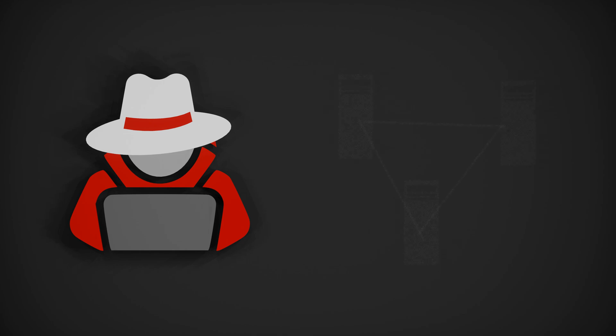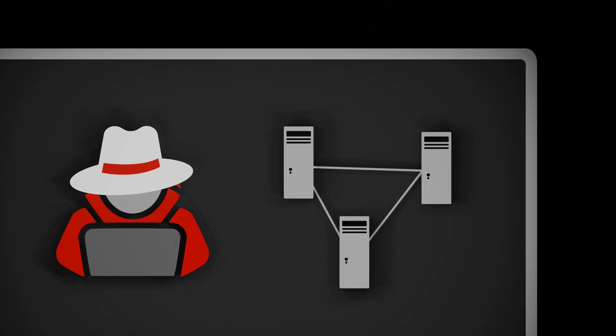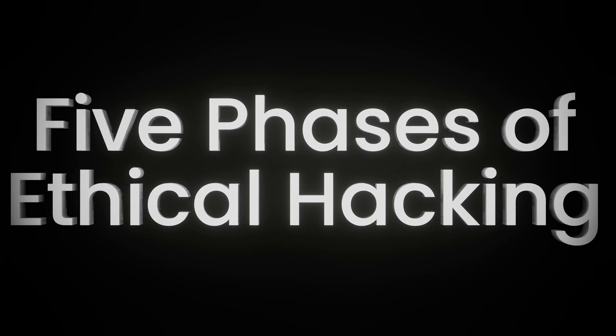Ethical hacking, also known as penetration testing or white-hat hacking, follows a structured approach to identify and address vulnerabilities in computer systems and networks. While every engagement is different, ethical hackers usually follow the same phases, called the 5 phases of ethical hacking.